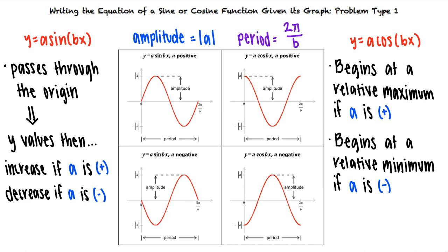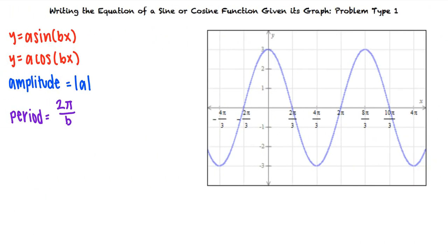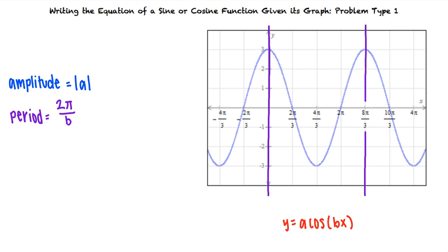Let's take a look at an example graph and write its equation. The first thing we can notice is that if we look at a single period, the graph starts at a maximum rather than the origin, which tells us that this is a graph of a cosine function. In order to find a, we must look at the amplitude. We see that the amplitude is 3 because the graph has a maximum of 3 and a minimum of negative 3. So the absolute value of a equals 3. Since the graph starts at a maximum and decreases, this tells us a is positive 3.